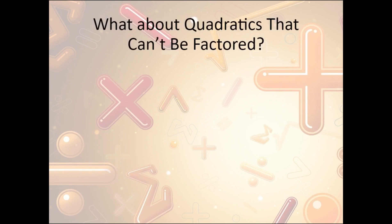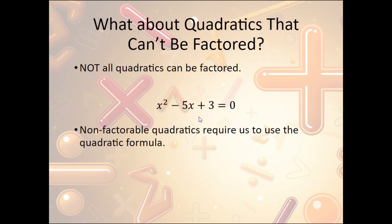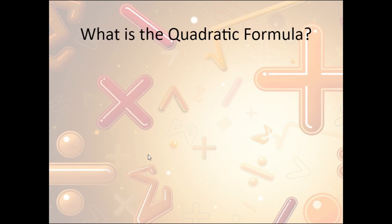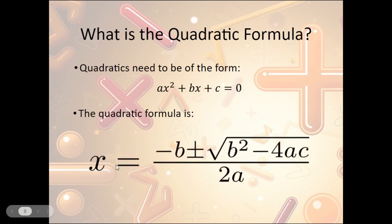Now what about quadratics that can't be factored? Not all quadratics can be factored. For instance, x squared minus 5x plus 3 equals zero is a non-factorable quadratic. When we get these non-factorable quadratics, we have to use what's called the quadratic formula. Quadratics will always appear as ax squared plus bx plus c equals zero, and from that we get: x equals negative b plus or minus the square root of b squared minus 4ac, all over 2a.